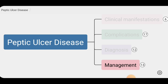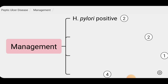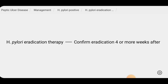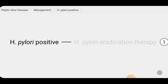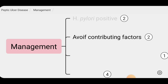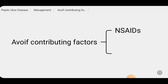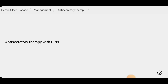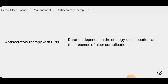Regarding management of peptic ulcer disease, all patients should undergo testing for H. pylori infection. If positive, H. pylori eradication therapy should be performed, and confirmatory testing should be done after four or more weeks. Patients should be advised to avoid contributory factors such as NSAIDs and poor dietary habits. All patients should be started on anti-secretory therapy with proton pump inhibitors such as omeprazole, pantoprazole, or esomeprazole. The duration of therapy depends on the etiology, ulcer location, and presence of ulcer complications.